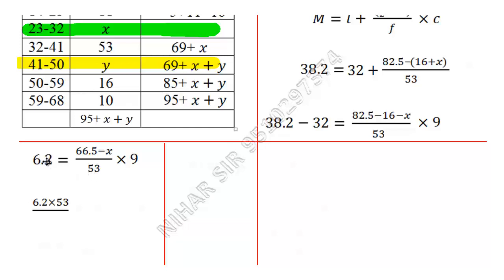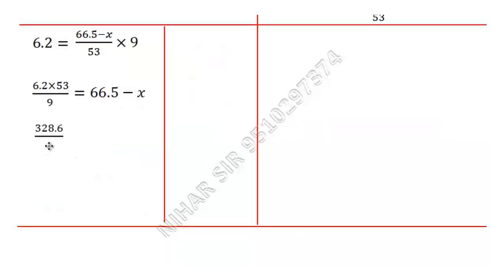Let us further simplify. I took this 53 over here and 9 in the denominator. Here I have 66.5 minus x. Now this will be 328.6 upon 9 equals 66.5 minus x. This will be 36.5 equals 66.5 minus x. I will take this 66.5 over here, so subtraction is minus 30.